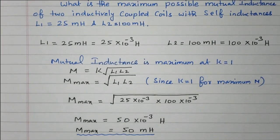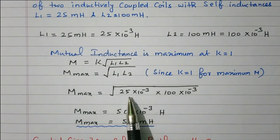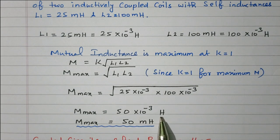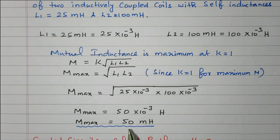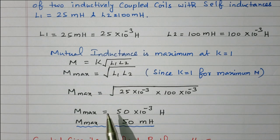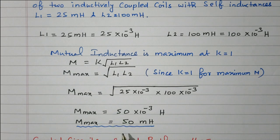Now we can simplify this. After multiplying and taking the square root, we get 50 into 10 to the power minus 3 henry. This 10 to the power minus 3 we can write as millihenry. So the maximum value of mutual inductance equals 50 millihenry. The condition is K equal to 1, meaning the coils are fully coupled together — 100 percentage. Coil 1 is 100 percentage coupled with coil 2.